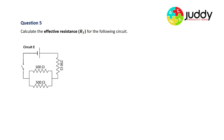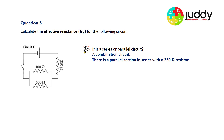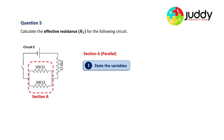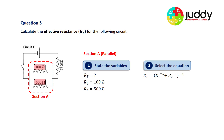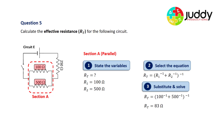Question five: calculate the effective resistance for the following circuit. It's a combination — there is a parallel section in series with a 250 ohm resistor. First, section A is the parallel section. We want to find its total resistance. The first branch has a resistance of 100 ohms and the second branch has a resistance of 500 ohms. Selecting the parallel equation and substituting 100 and 500, we end up with an effective resistance for section A of 83 ohms.